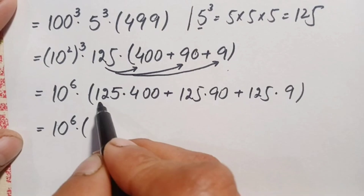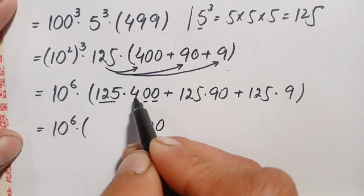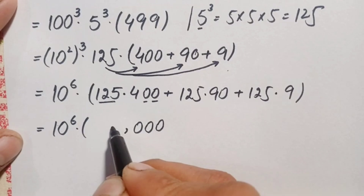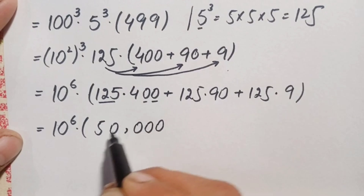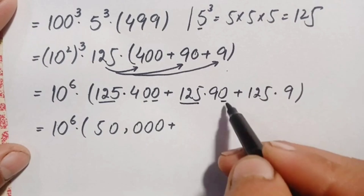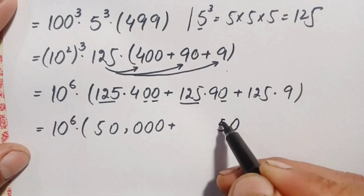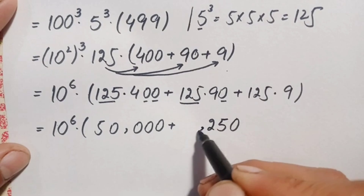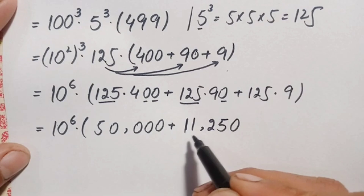So this gives us 10 to the power 6 times the sum. For 125 times 400: working digit by digit, 4 times 5 is 20, carry 2; 4 times 2 is 8 plus 2 is 10, carry 1; 4 times 1 is 4 plus 1 is 5. So 125 times 400 equals 50,000. For 125 times 90: 9 times 5 is 45, carry 4; 9 times 2 is 18 plus 4 is 22, carry 2; 9 times 1 is 9 plus 2 is 11. So 125 times 90 equals 11,250.